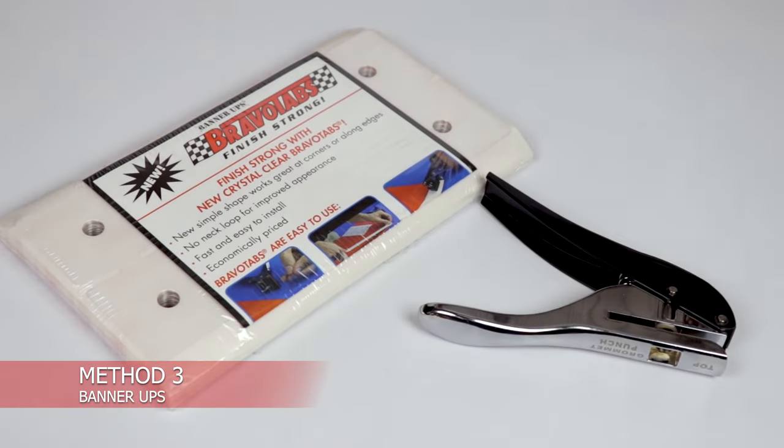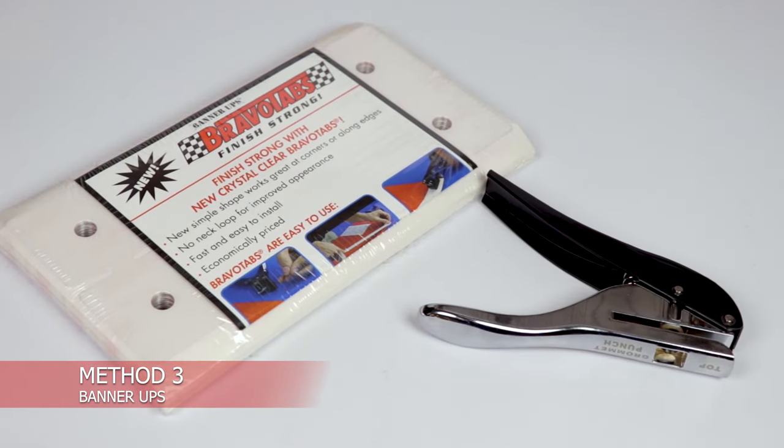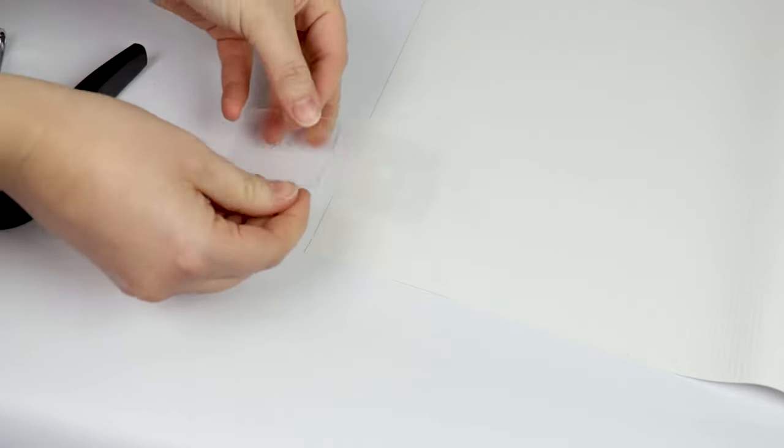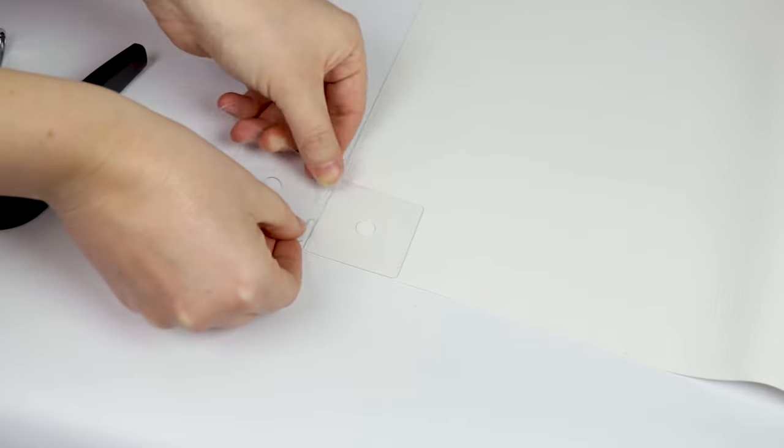Method three: Banner Ups. In this method you'll need Banner Ups bravo tabs and easy punch. Peel the bravo tab off the backing sheet. Apply the adhesive bravo tab on the corners of your banner.